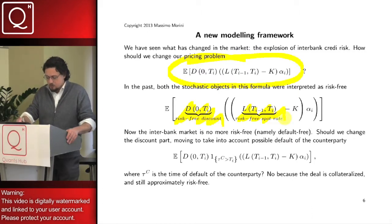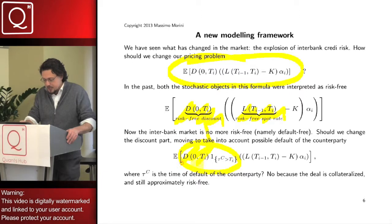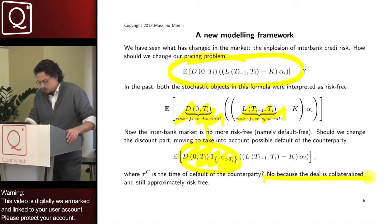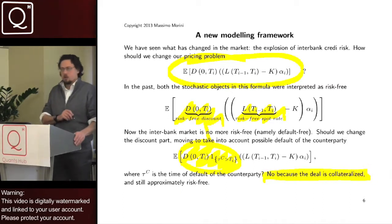So, is the point that we have to move from a risk-free discounting to a discounting that takes into account, for example, risk of default of the counterparty? No, because the deal is collateralized.